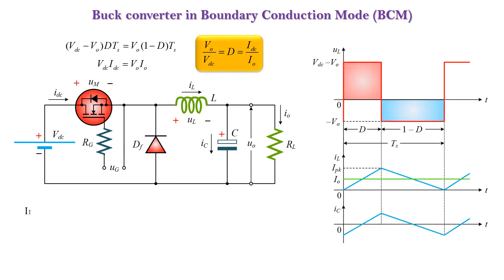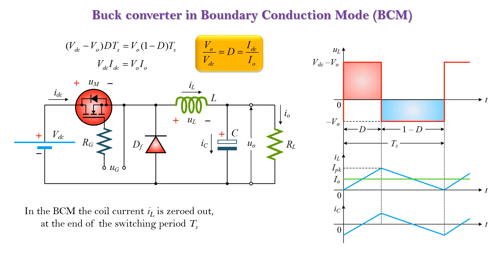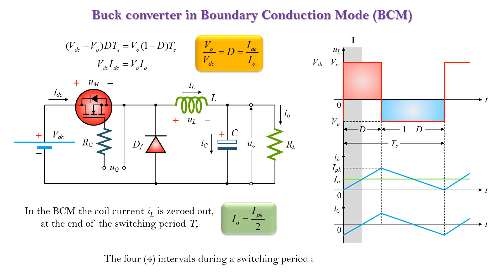In the boundary conduction mode, the coil current IL is zeroed out at the end of the switching period TS. The four intervals during a switching period are identical to continuous conduction mode.